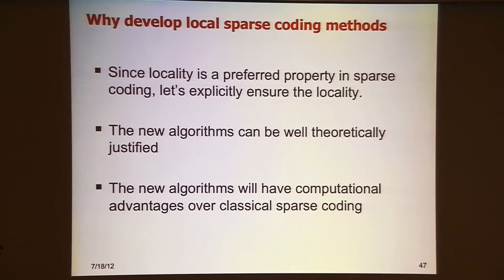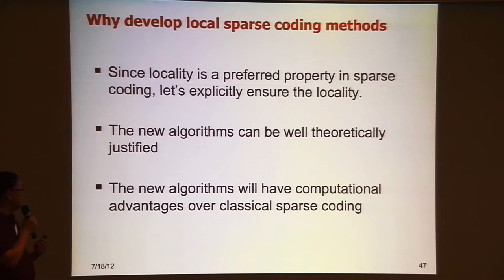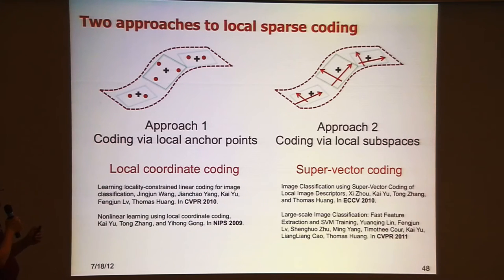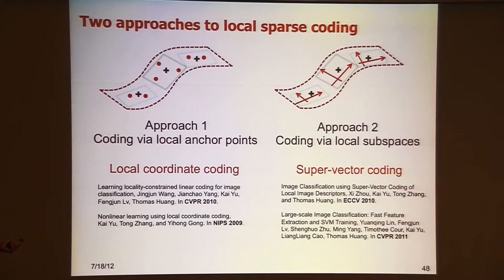Those are two possible approaches to local sparse coding: the first uses local anchor points, and the second uses local subspaces. We published papers for each method. The first is called local coordinate coding (LCC), and the other is super vector coding. For both methods, they are very easy to compute.